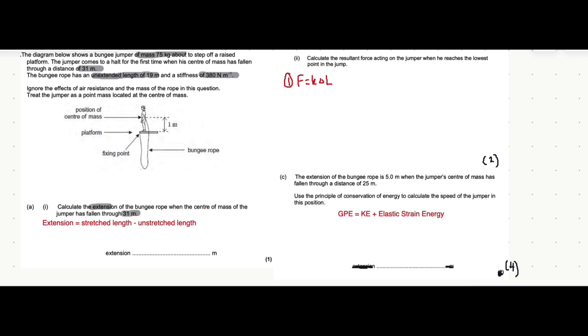It's then asked for the extension after the person falls through 31 meters from where they currently are. So if they're currently here and they fall through 31 meters, that means they're 30 meters below the platform. Then it also says the unstretched length is 19 meters earlier on in the question. So if the unstretched length is 19 meters from the platform downwards, but then it stretches to a length of 30 meters below the platform, 30 take away 19 is 11, and that's the extension.